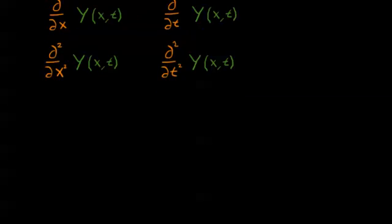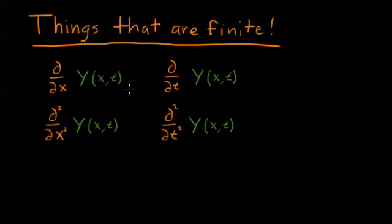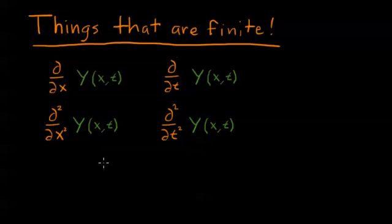Let's take a moment to recap what we've learned in the last few videos. The first derivative with respect to x of our wave function must be finite, because the string doesn't break as we're wiggling it. We also learned that the second derivative of our wave function must also be finite, because we can't make an infinitely sharp kink in the string.